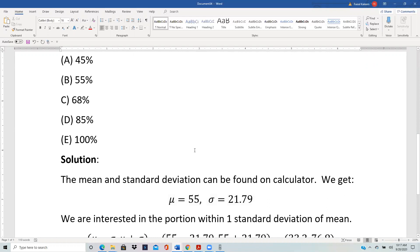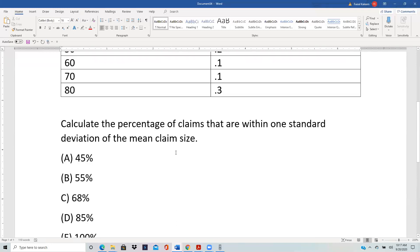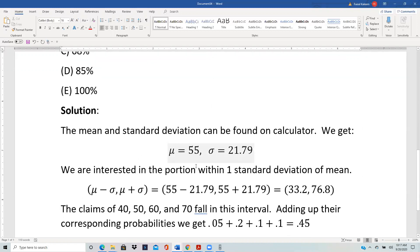So we are interested in what proportion of claims lie within one standard deviation of mean. So you go one standard deviation on either side of the mean. So mean minus one standard deviation and mean plus one standard deviation.